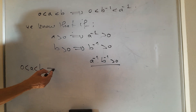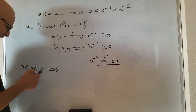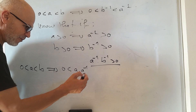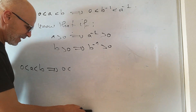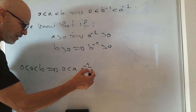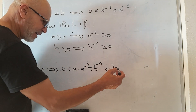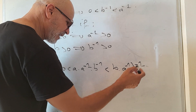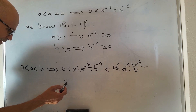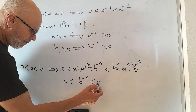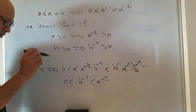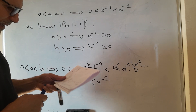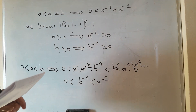Starting from 0 < a < b, we multiply by the positive quantity a⁻¹ · b⁻¹, which preserves the inequality direction. We get a · a⁻¹ · b⁻¹ less than b · a⁻¹ · b⁻¹. The terms cancel, giving 0 < b⁻¹ < a⁻¹. This ends the solution of the second exercise.